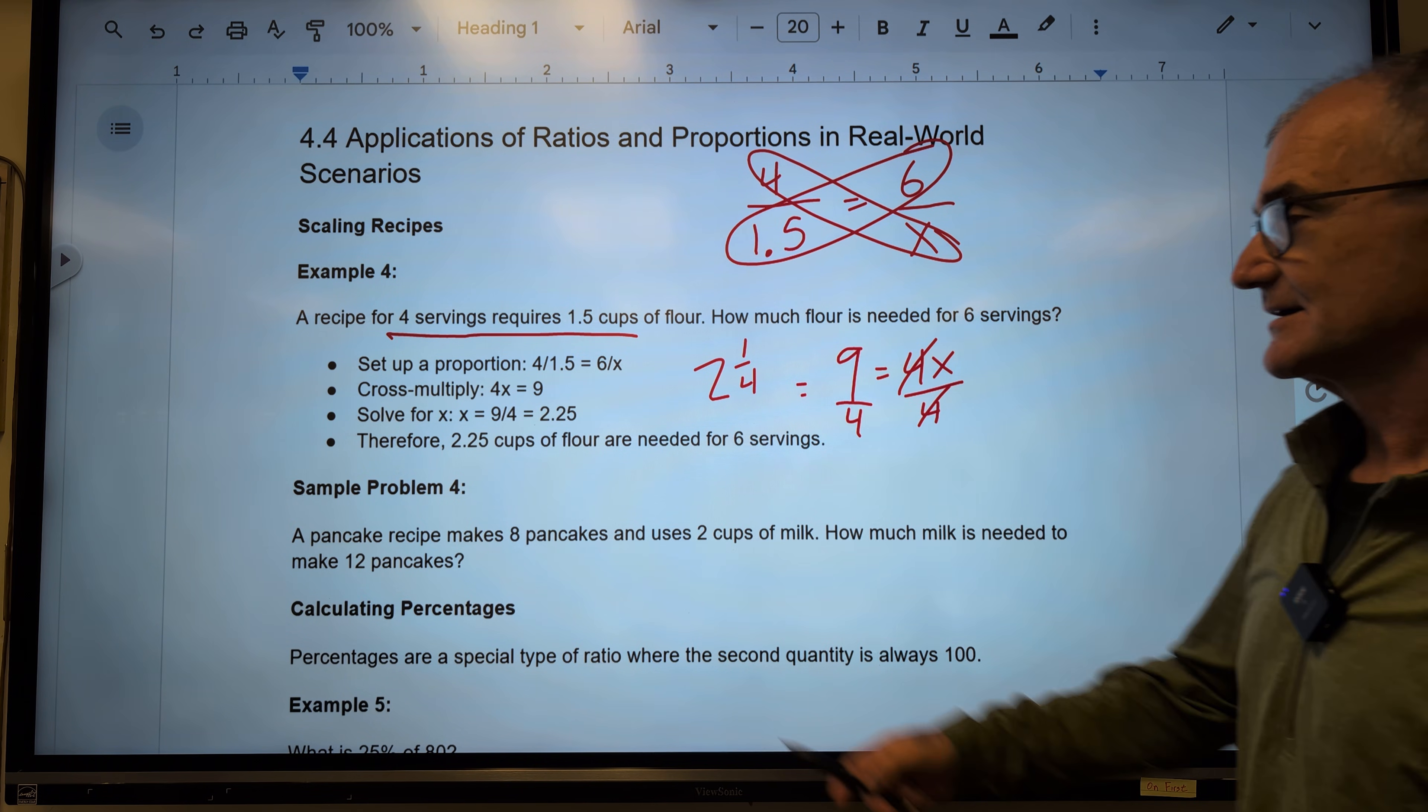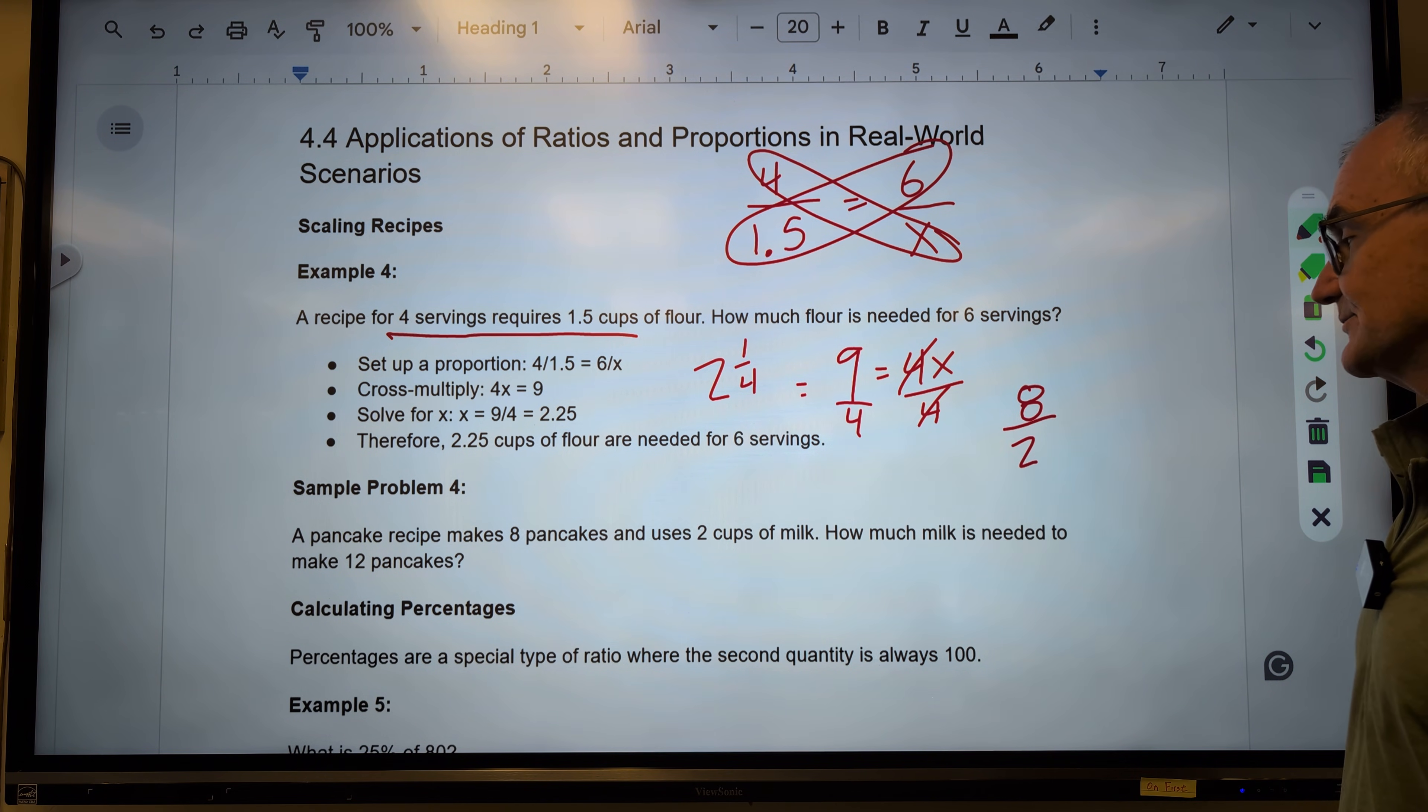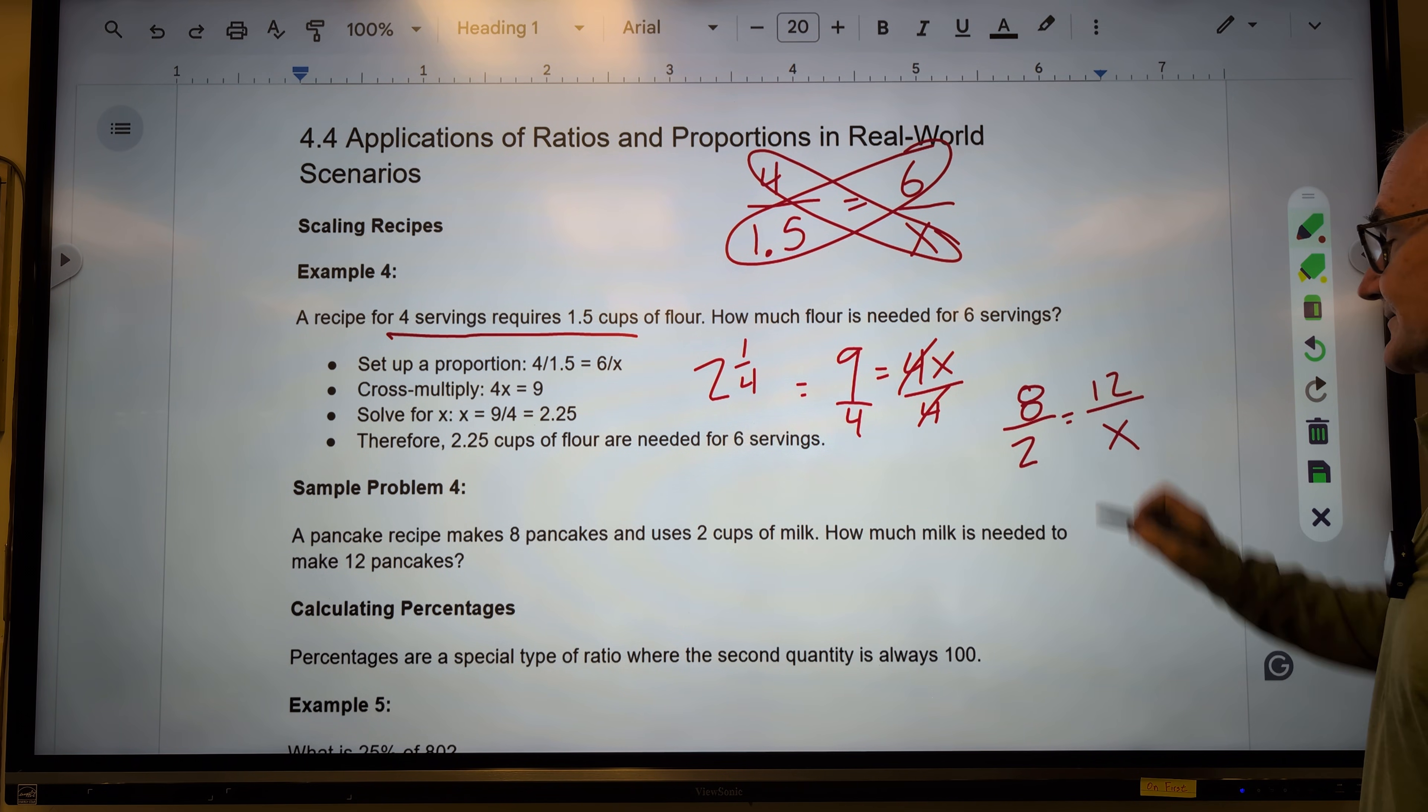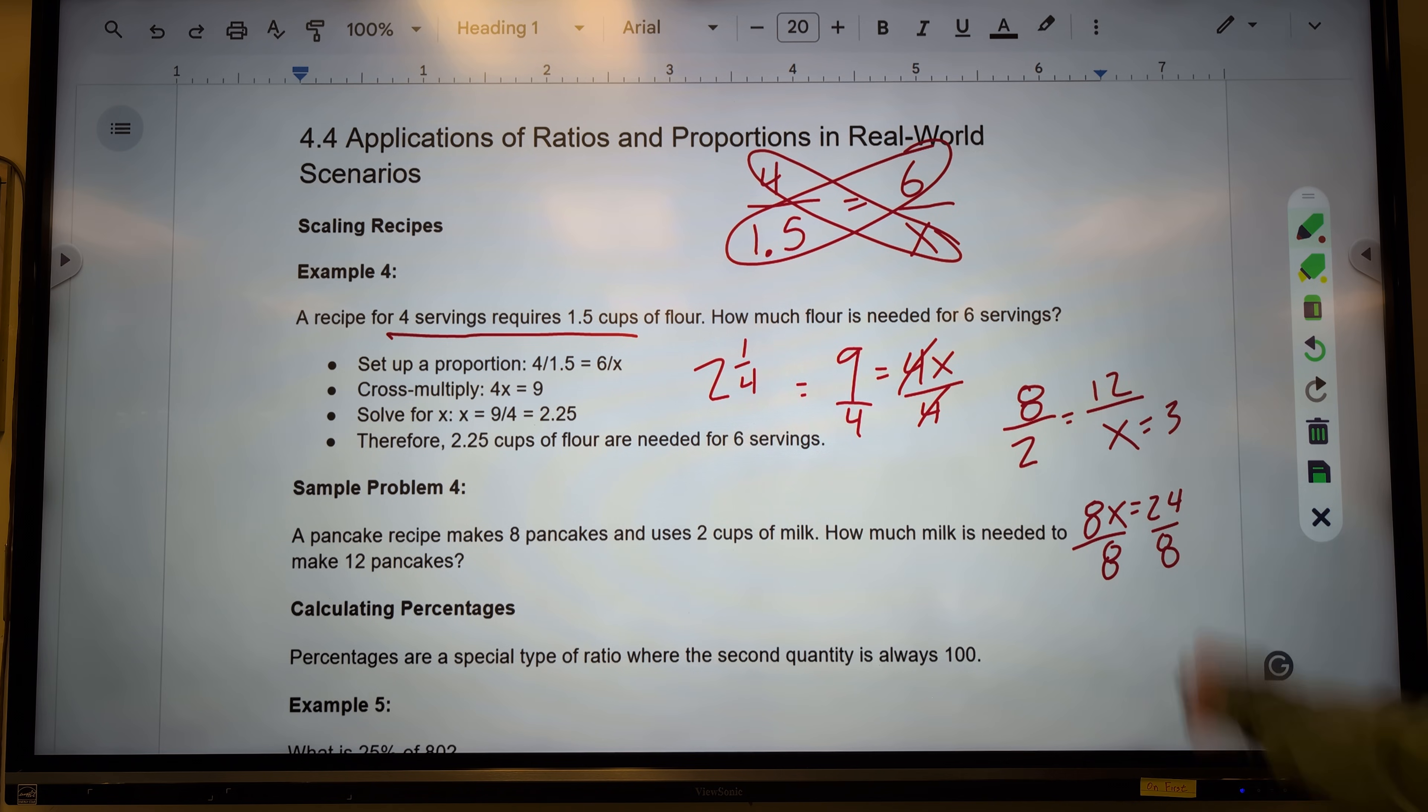Okay, here's another sample problem. Go ahead and pause the video and we'll run through it. A pancake recipe makes 8 pancakes per 2 cups of milk. How much milk is needed to make 12 pancakes? So again, I have 8x is equal to 24. Divide both sides by 8. I get x is equal to 3. See if that looks right. 8/2 is 4, 12/3 is 4. So the correct answer is 3 right here.